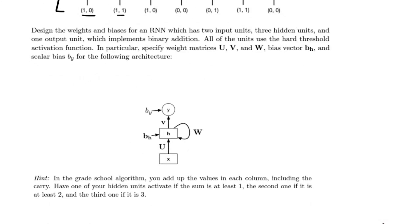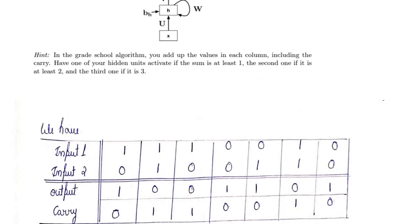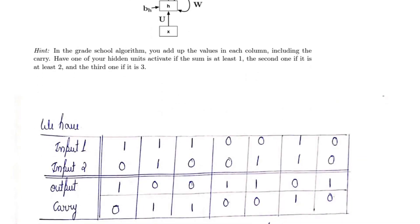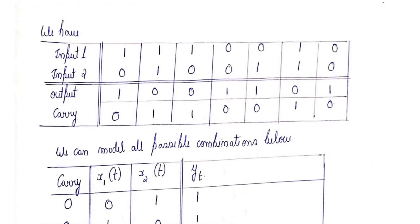Now we proceed. This is input 1 — I copied the values from the question — and input 2. If I add 1 and 0 we get the output as 1, we are not carrying anything. Now if I add 1 and 1, it is actually 2 but we write it as 0 and there is a carry of 1 in the next step.